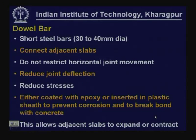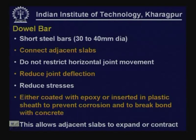Dowel bars are basically short steel bars. The diameter will typically be 30 to 40 millimeters and length will be about 400 to 500 millimeters. They connect adjacent slabs; however, they do not restrict horizontal joint movement. If the two slabs have to separate away from each other because of contraction that is permitted, because the dowel bar is not bonded to the slab on both sides — at least on one side it is going to be smooth — so that separation is permitted.